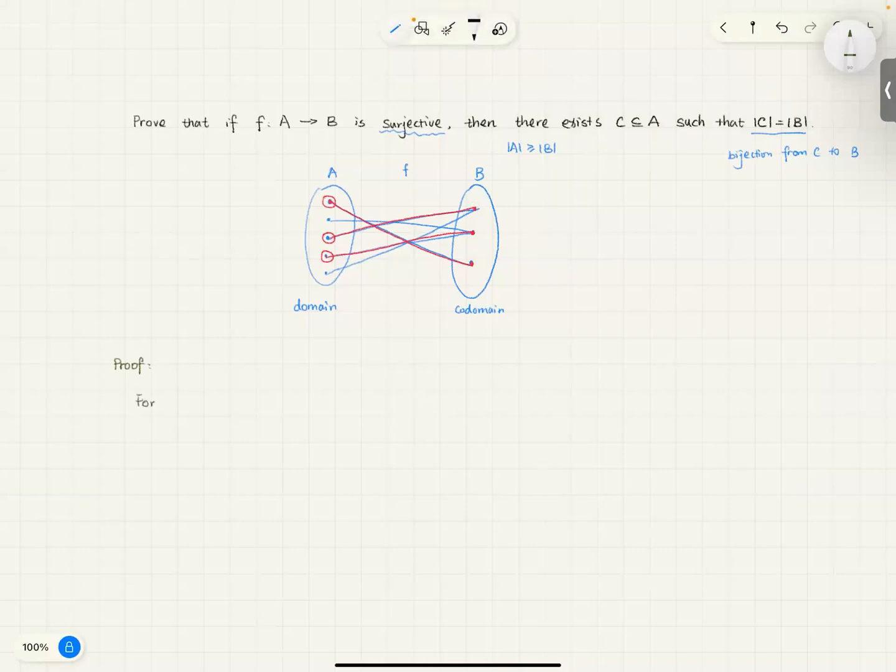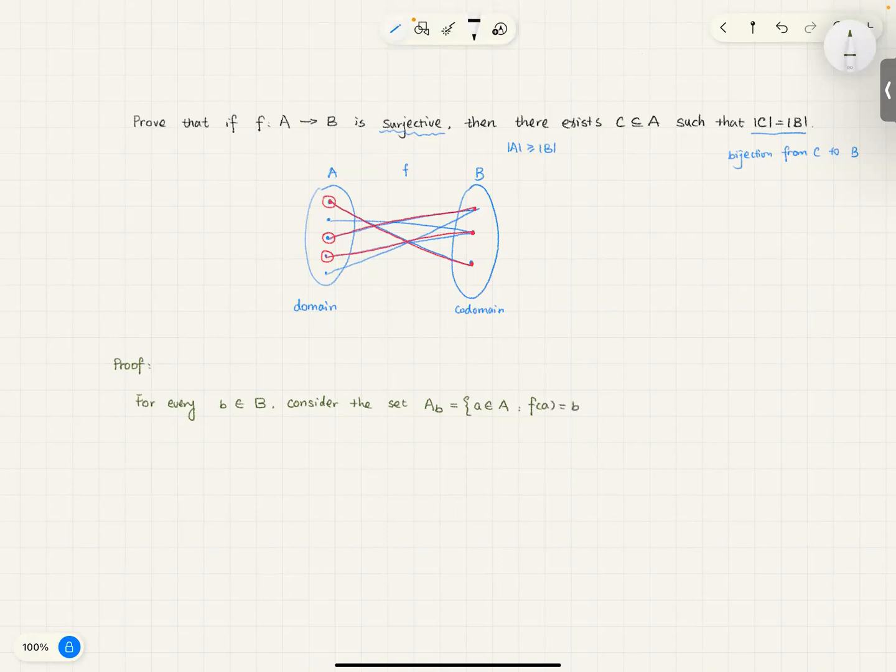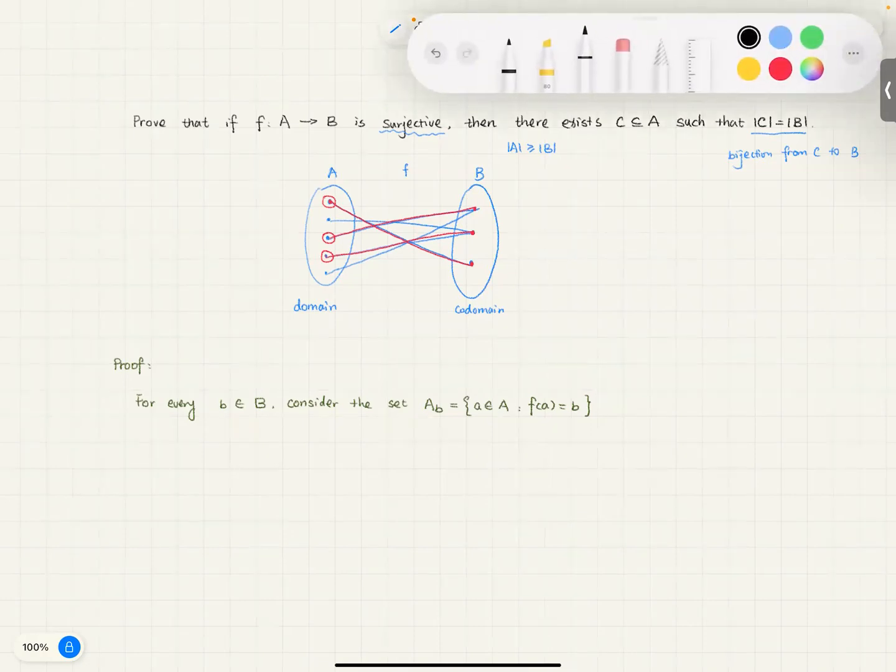So, for every b in B, I can consider the set. Let's call it A_b, which is a in A. So, this set will be, it's an element in A, and it has a restriction that f(a) must map to b. When I did that in tutorial, some people did not understand this. So, let me use the above demonstration to show what this even means.